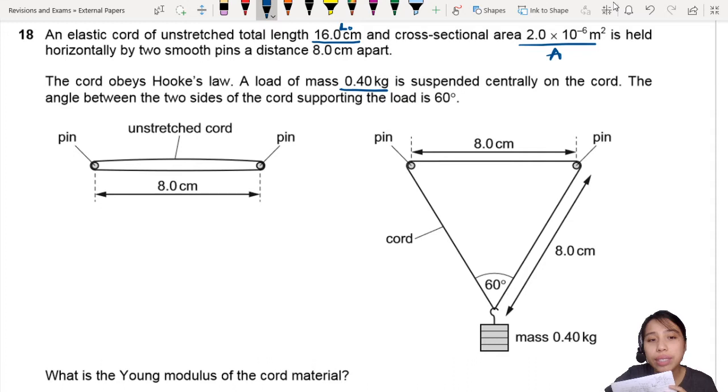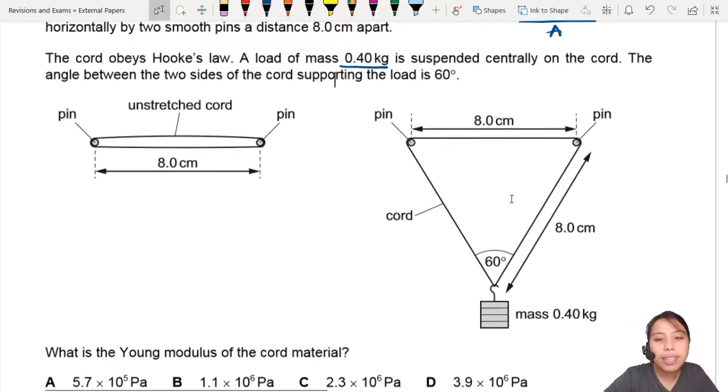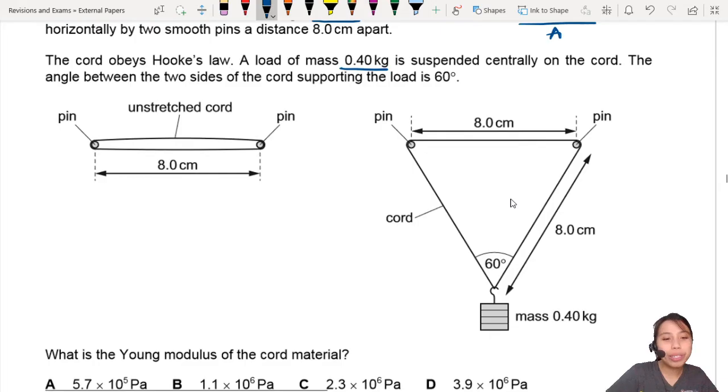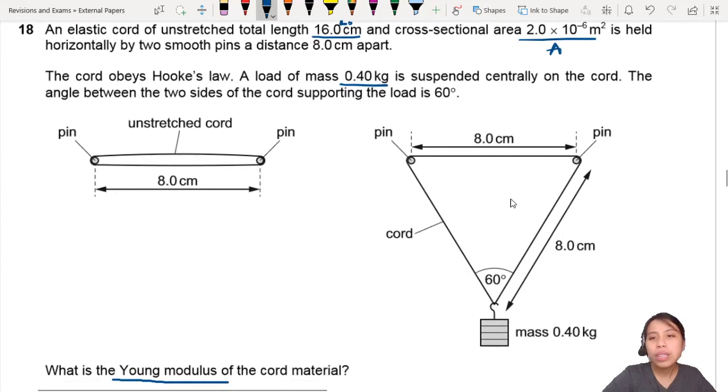The angle between the cord is 60 degrees. What are we supposed to find? What is the Young modulus of the cord material? Usually they ask for tension forces, but this time they ask for the Young modulus.